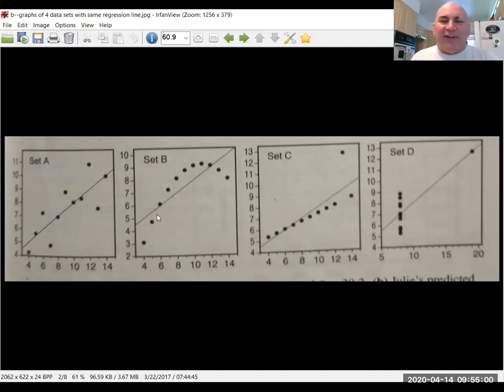Here it's obvious the data are not linear because you have these data points below and then a whole bunch of data points above, then some data points below. There's a pattern there. It looks like the data set's parabolic. Why would you trust this line to predict y values for parabolic data?